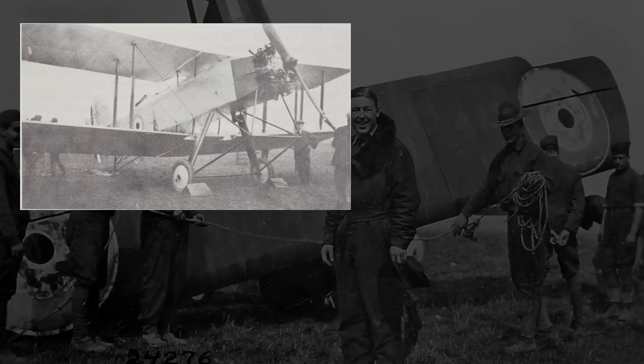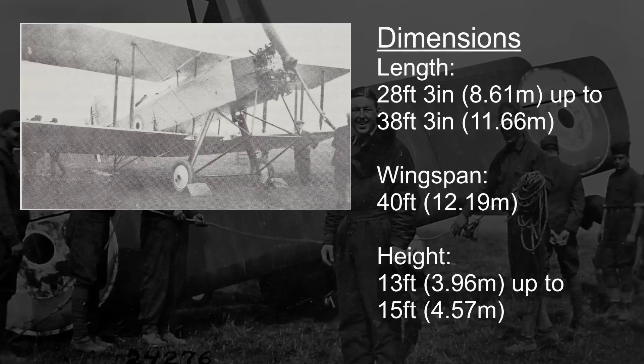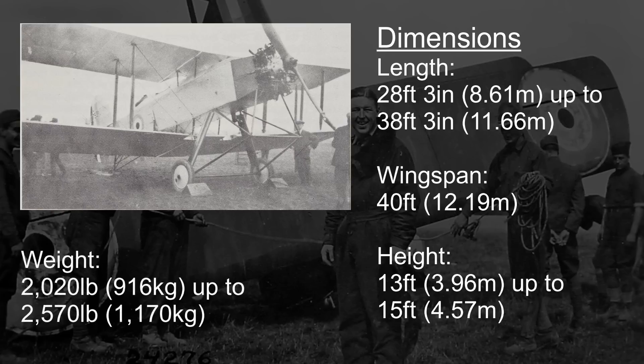With all of these possible modifications, the dimensions and weight of the Ape varied quite a bit. While the wingspan would stay constant at 40 feet, the length would vary between 28 feet 3 inches and 38 feet 3 inches. The height would also vary, albeit a bit less, between 13 and 15 feet. With the added segments, the empty weight ranged from 2,020 pounds up to 2,570 pounds.